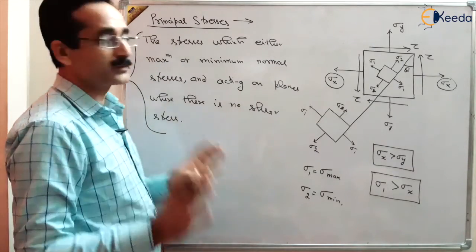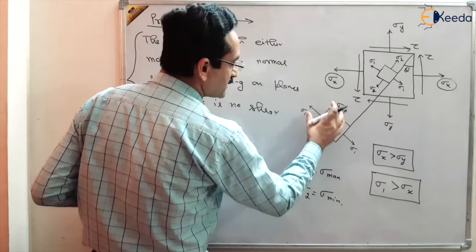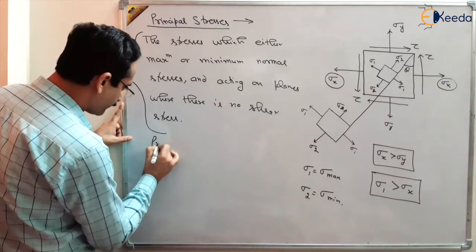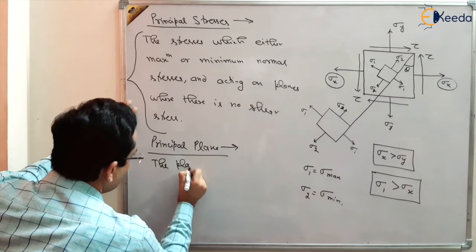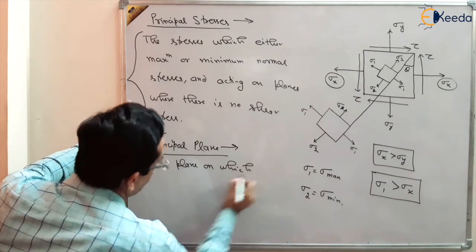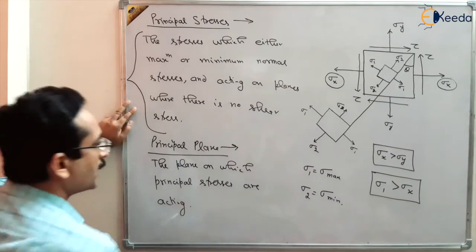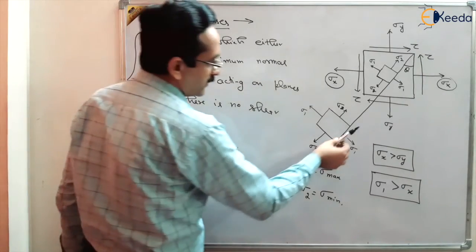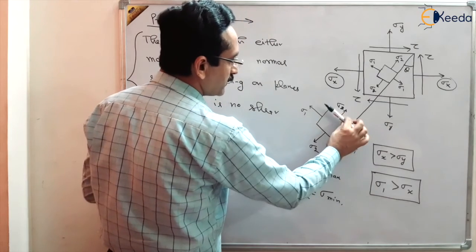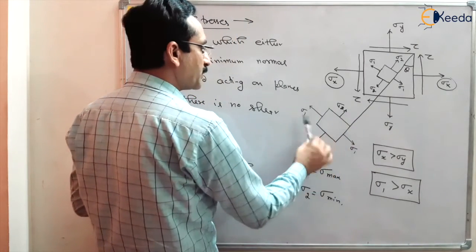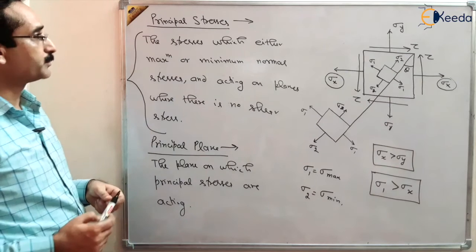So these are the principal stresses. And what are principal planes? The planes where these principal stresses are acting are the principal planes. Here you can see — this plane is one of the principal planes, and this plane is another principal plane, because principal stresses are acting on these two planes. So these are the principal stresses and principal planes.